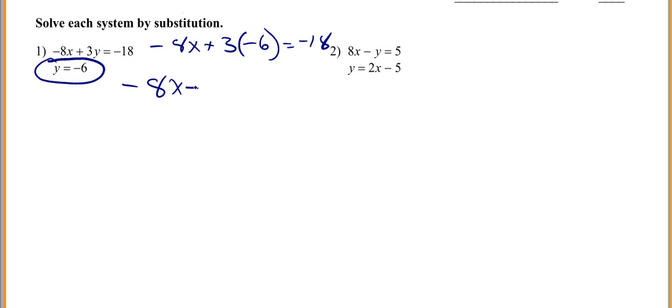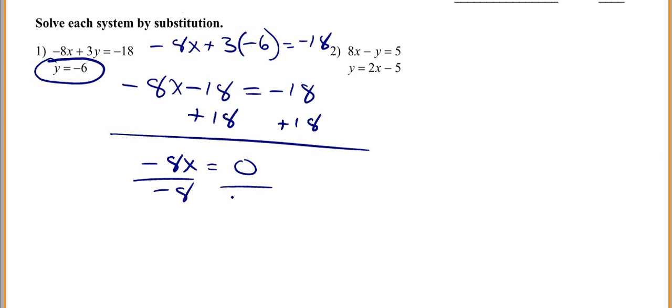So I have negative 8x minus 18 equals 18. I am going to add 18 to both sides. So I have negative 8x equals 0, divide both sides by negative 8, x equals 0. Then you take your final answer and write it as an ordered pair. So what we know, these lines intersect at this point: (0, negative 6).